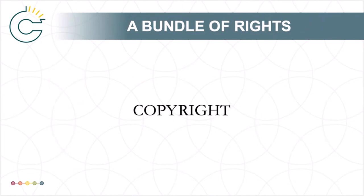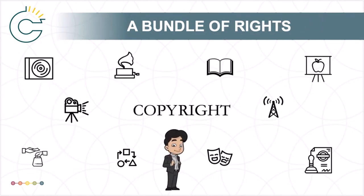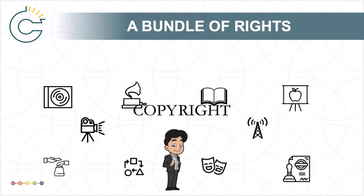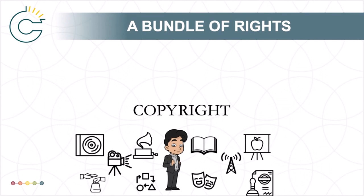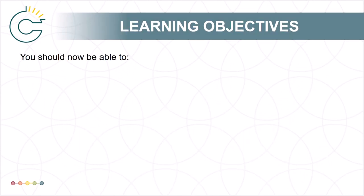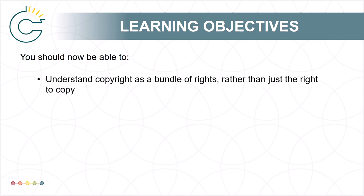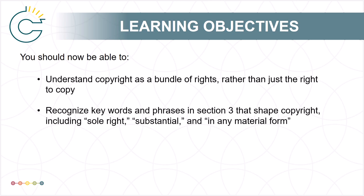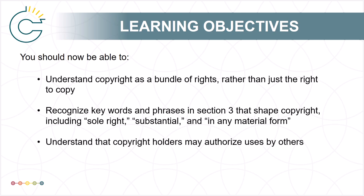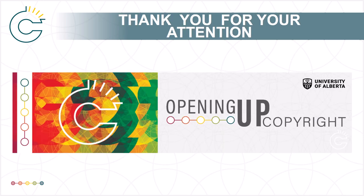Thus, Section 3 of the Copyright Act structures copyright as a bundle of exclusionary rights for the rights holder in a work, who not only has the sole right to make certain uses of the work, but who can also authorize others in relation to those uses of the work. You should now be able to understand copyright as a bundle of rights rather than just the right to copy, recognize key words for Section 3 that shape copyright — for example, sole right, substantial, and in any material form — and understand that copyright holders may authorize uses by others.